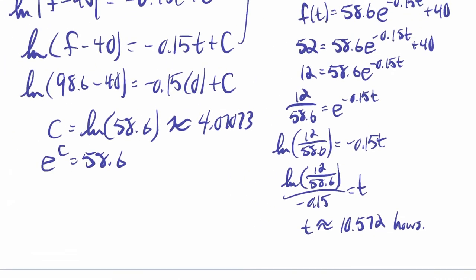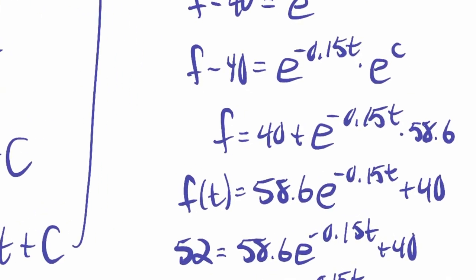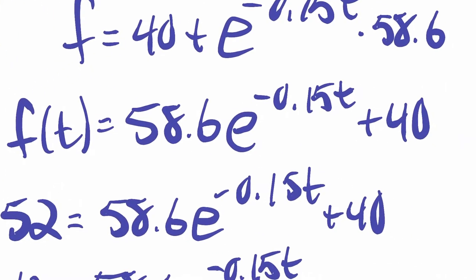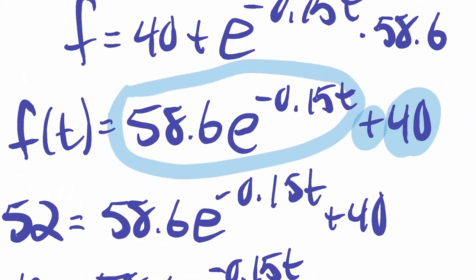Something to point out: this is very similar to the previous examples, but the antiderivative on the left required a substitution because of the (f - 40) term. The resulting function shows temperature equals 40 plus a decaying amount — the decay rate depends on clothing and environmental factors like air movement.